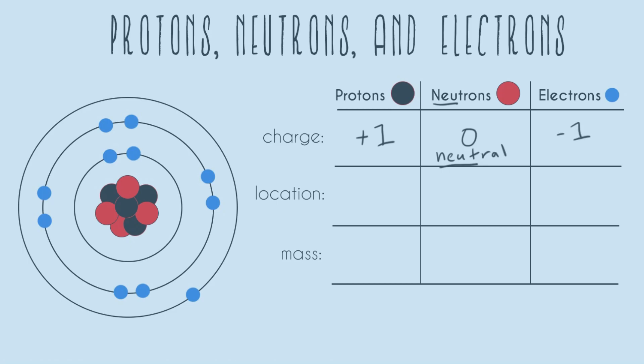Next, let's go over the location of all three different subatomic particles. Both protons and neutrons are in the nucleus. And electrons fly around the nucleus in orbitals.